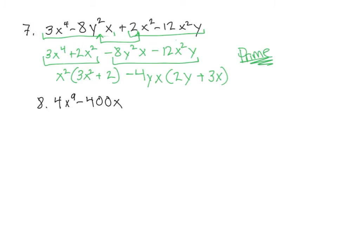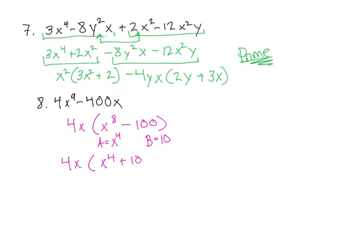Problem 8: we need to factor this by first factoring out the greatest common factor, which would be 4x. We are left with x to the 8th minus 100. x to the 8th is a perfect square, so my a would be x to the 4th. And 100 is a perfect square, which would be 10. So if we factor that using the difference of the squares, we get x to the 4th plus 10, x to the 4th minus 10.